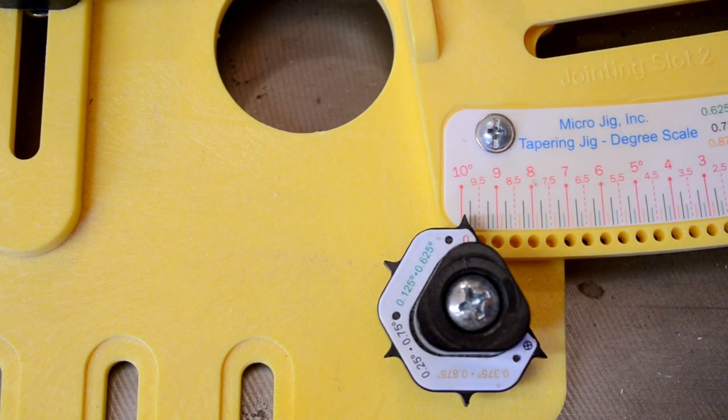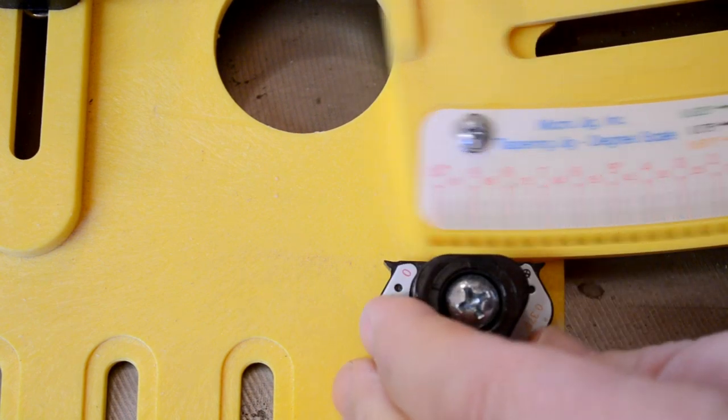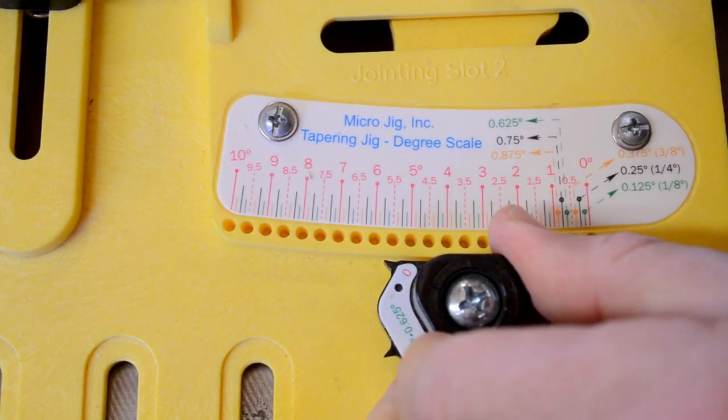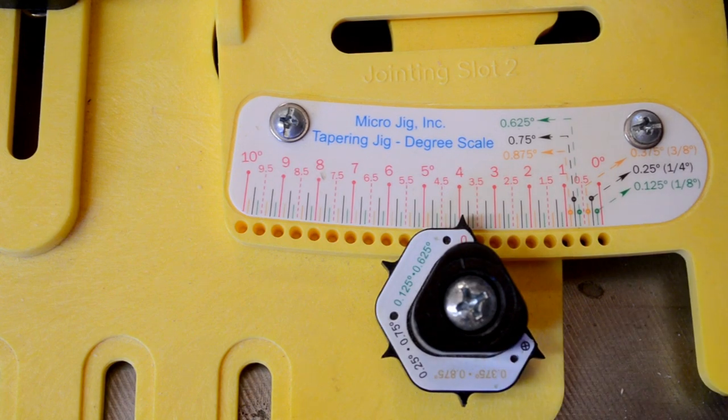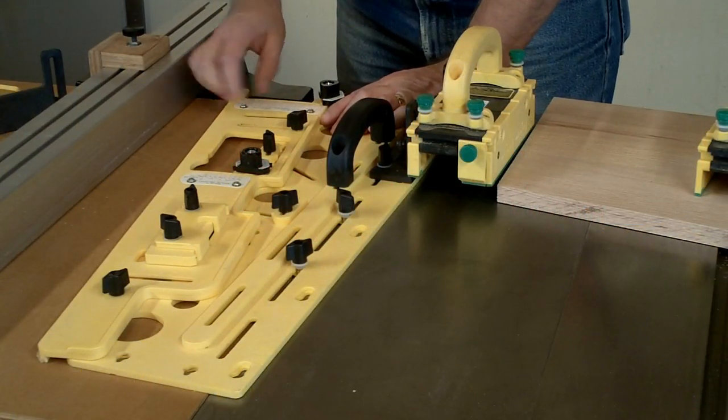Ensure that the screws are tight, and that should align your scale properly. And please remember that the micro-dials are there to align the jig, but not to hold it in place during use, so always secure it with the lock knob.